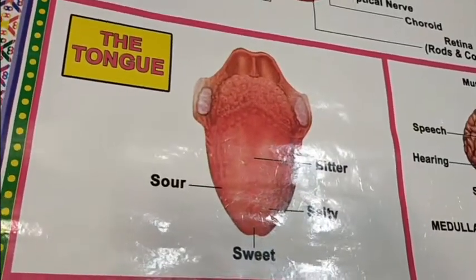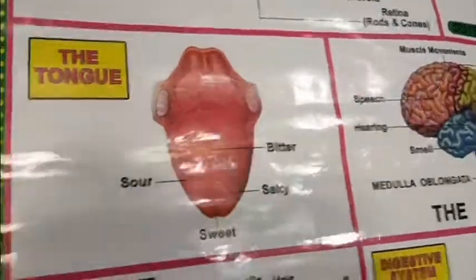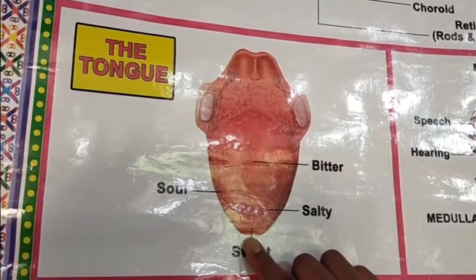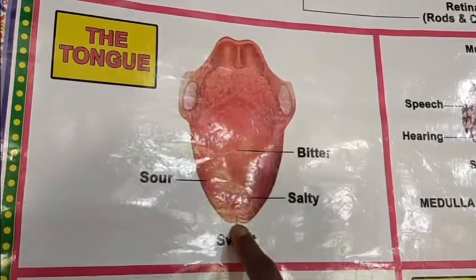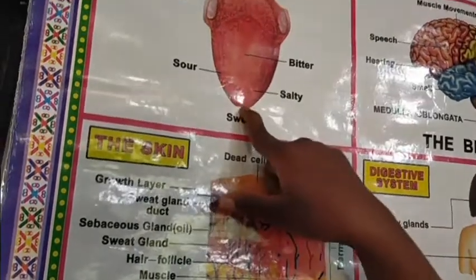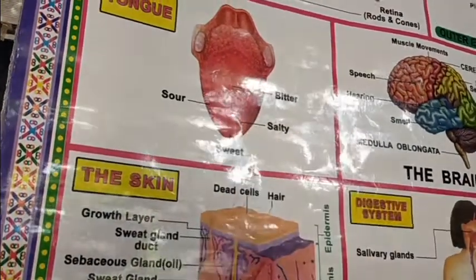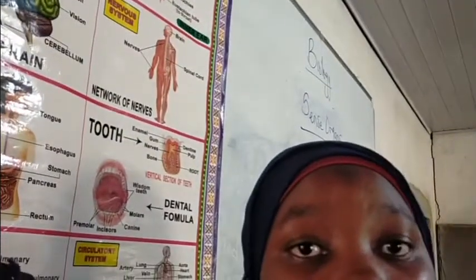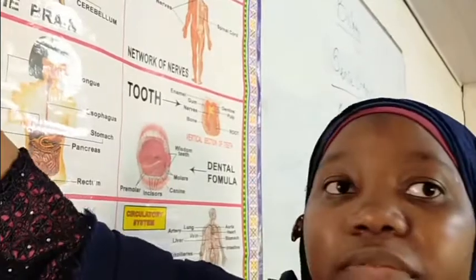The tongue detects four major tastes. Sweet is detected right at the tip of the tongue. Especially during Ramadan when you are cooking, if you want to know if your food is too salty or if there is enough sugar in your pastries, place a little on the tip of your tongue. For salt, you place it on one side of the tongue, very close to the front — the salty taste is detected there.